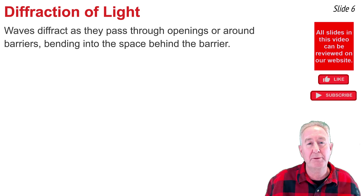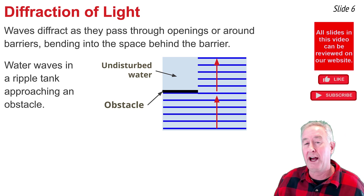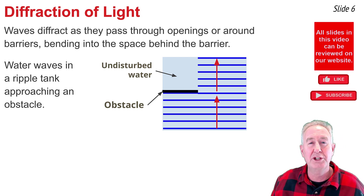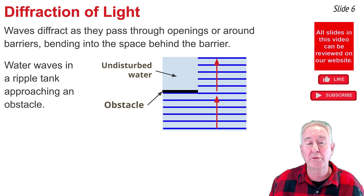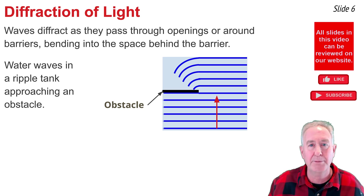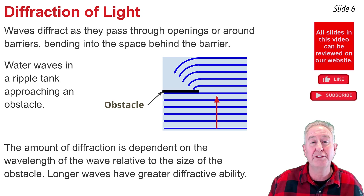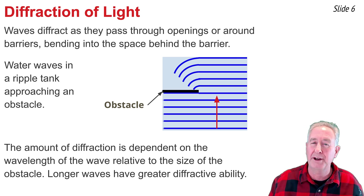Diffraction is a well-known wave behavior. It describes the tendency of a wave to pass through an opening or around a barrier and fill in the region of space directly behind that barrier. This diagram illustrates water waves traveling through a tank and approaching an obstacle in their path. Rather than continuing straight ahead and leaving an undisturbed region directly behind the obstacle, the waves bend into the region of space directly behind the obstacle — producing small ripples behind it, indicating that water waves undergo diffraction. The tendency to undergo diffraction depends upon the wavelength of the waves relative to the size of the obstacle, with longer wavelength waves undergoing a greater amount of diffraction.